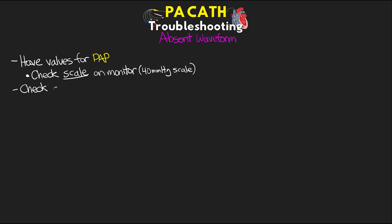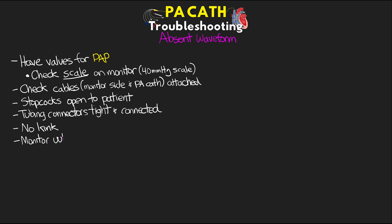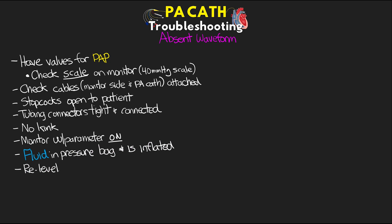From there, check and make sure that all the cables — both the monitor end and the PA catheter patient end — are securely attached. Check all your stopcocks to ensure that you have an open path from the patient to the transducer. Make sure all pressure tubing connections are tight and connected to the PA catheter, check for any kinks in the system, and ensure that the monitor actually has the PA catheter parameter turned on. Also make sure that you have enough fluid in your pressure bag and that it is appropriately inflated, then re-level and zero.